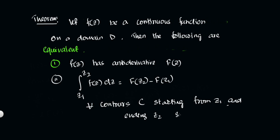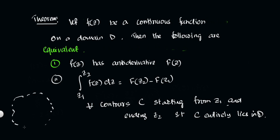The contour C starts from z1 and ends at z2, such that C lies entirely in the domain D. Suppose our domain is a complex domain — draw a dotted line representing domain D. The contour C connects z1 to z2 and lies completely within D. So Statement 1 and Statement 2 are the two equivalent statements we need to work with.